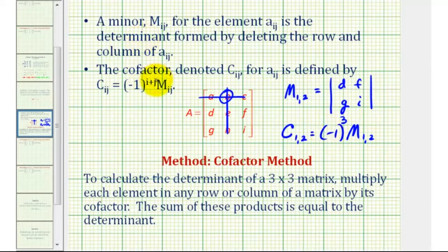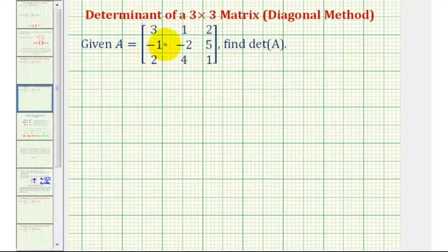Now that we know what the minor and cofactor are, we can use the cofactor method to find the determinant of a three by three matrix. To calculate the determinant, we multiply each element in any row or column by its cofactor, and the sum of these products equals the determinant. Since none of the elements are zero, it doesn't matter which row or column we choose, so let's work across the first row.